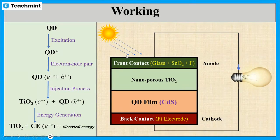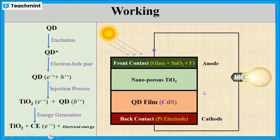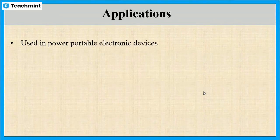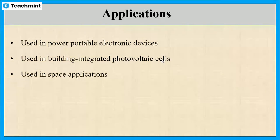When the front contact absorbs the photon, electron movement takes place from anode to cathode, as clearly observed in the diagram. The applications of quantum dot solar cells include use in UPS systems, building-integrated photovoltaic (PV) cells, and even in space and military applications.